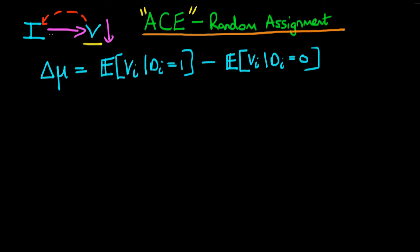The problem we have is an issue of reverse causality which was confounding our estimates of this effect. We defined a potential level of violence V1I — the level a given district would obtain if they did receive infrastructure spending — and V0I, the level of violence that state would obtain if they didn't receive infrastructure spending. What we're interested in is evaluating for each state the difference between these two potential outcomes, because that tells us the causal effect of infrastructure spending on violence. These will in general be different for each state, depending on state-specific characteristics.